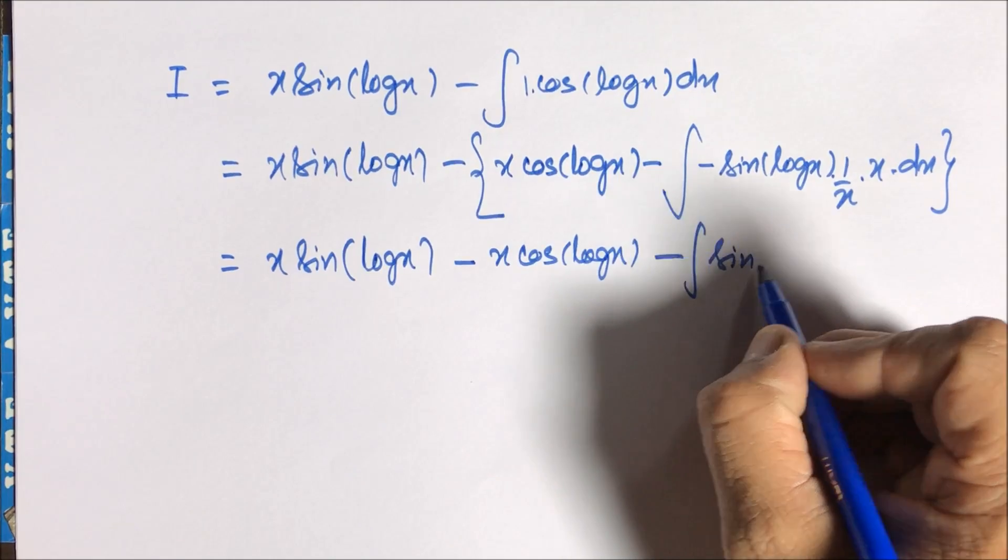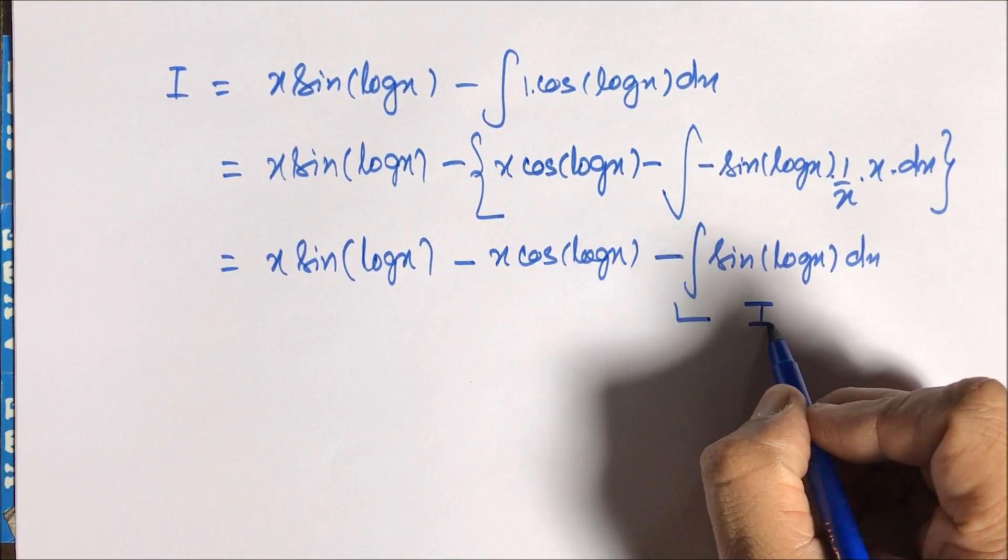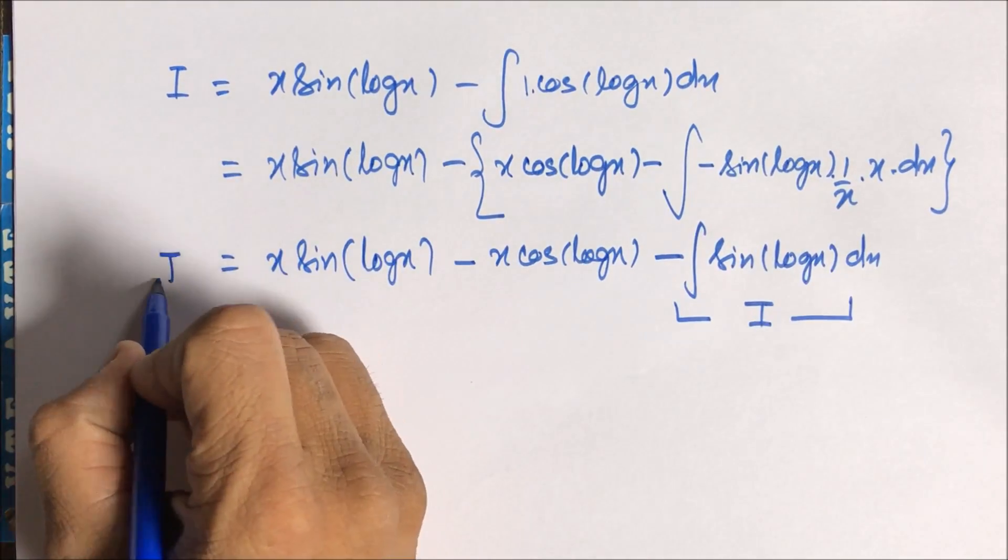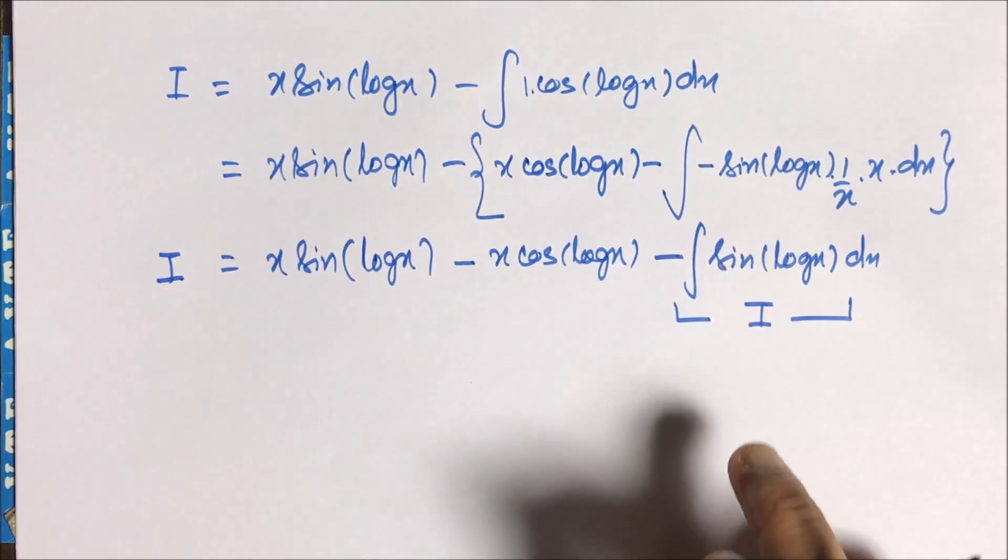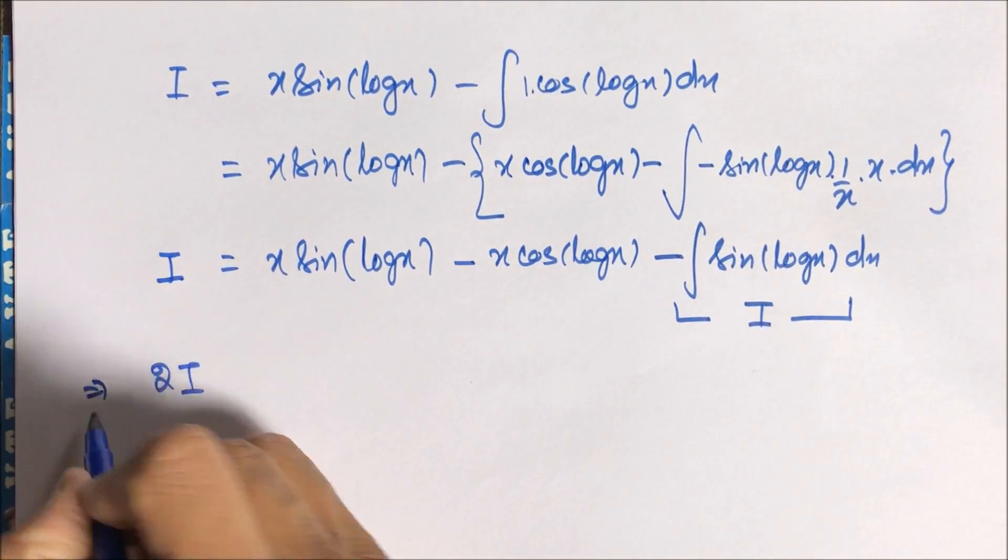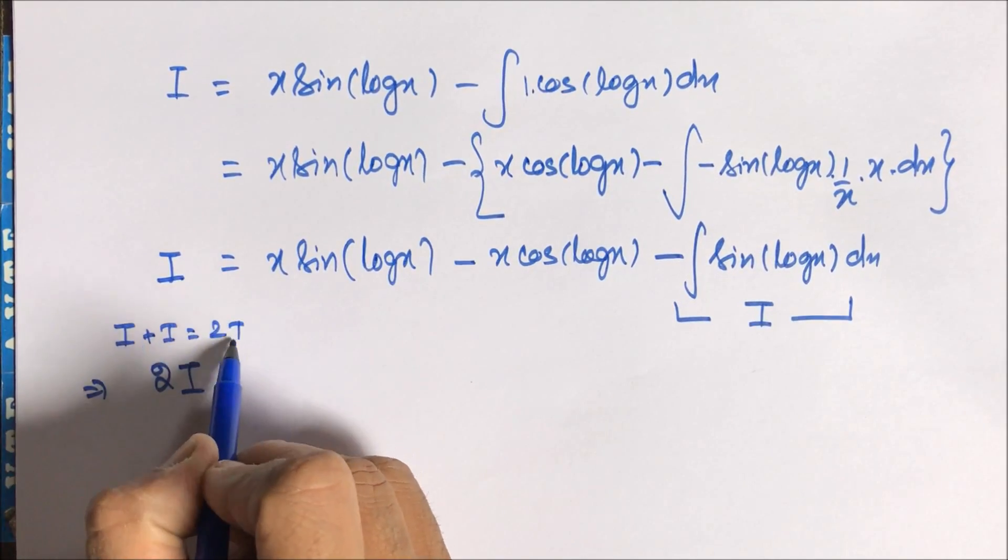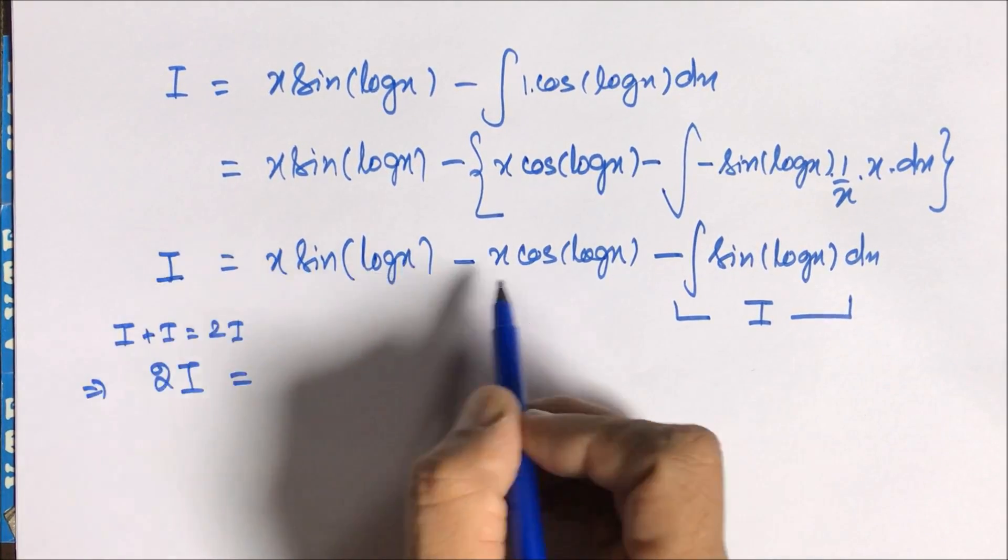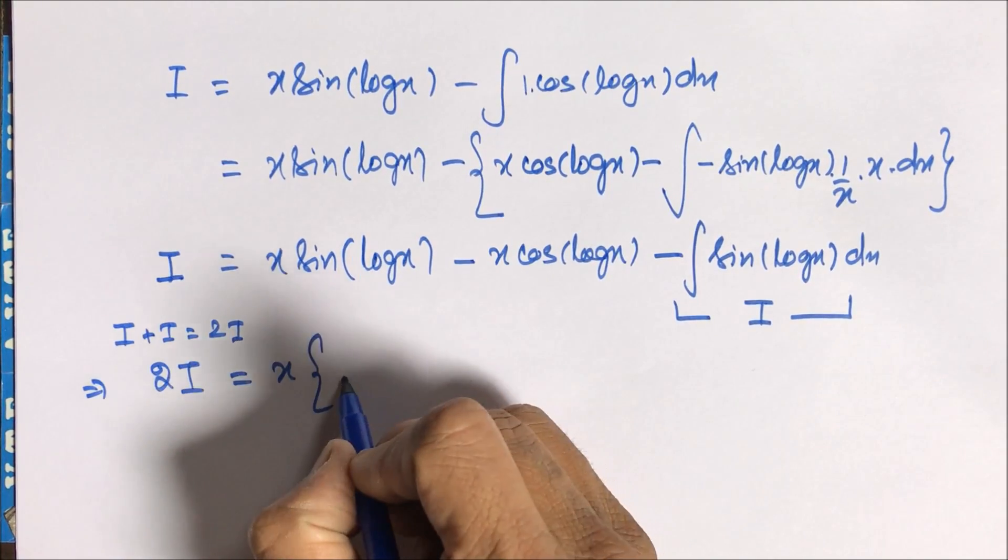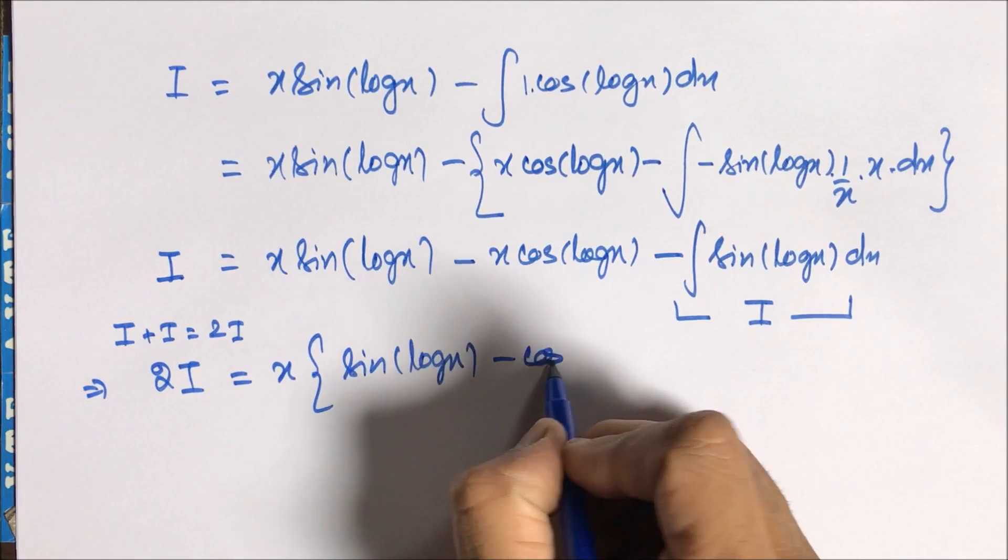This is sin(log x), so we can put this as I. So this I is equal to minus times of that I, so we can transform I to the other side. And I plus I is 2I, and in the meantime we can take x common, leaving sin(log x) - cos(log x).